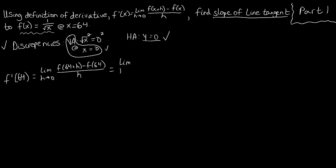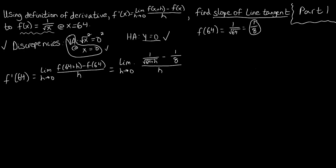So what we have is the limit as h approaches 0 of f of 64 plus h minus f of 64, all over h. Using our f of x, f of 64 plus h becomes 1 over the square root of 64 plus h, and f of 64 is 1 over the square root of 64, which evaluates to 1 over 8. So we have the limit as h approaches 0 of 1 over root(64+h) minus 1/8, all over h. Passing the limit by plugging in 0 for h gives us 1/8 minus 1/8 in the numerator, which is 0, so we get 0 over 0 — indeterminate.